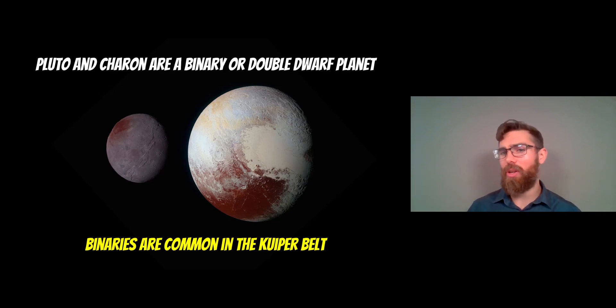The only other one in our solar system which is similar to that is the Earth and the moon. There is a big kind of size, they're quite close in size compared to the normal moon planet system. And because of that, we can think of them as double planets or dwarf planets.